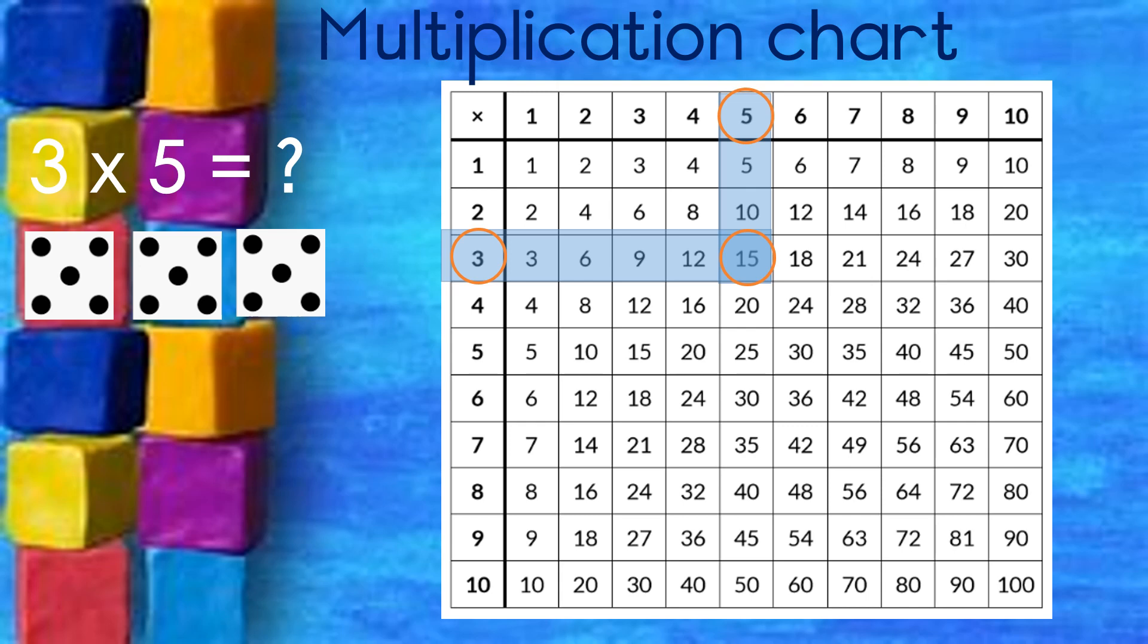If I go down with the 5 and across with the 3, the two meet at 15. So 3 times 5 will give me 15.